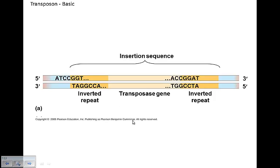There are two types of transposons. There's a basic insertion where you just insert a gene — this is the simplest form. Or you can use a transposase gene. Since it ends in '-ase,' it's going to be an enzyme. That's right — it's an enzyme that controls the transposition. The transposase enzyme allows the DNA to jump from location to location.